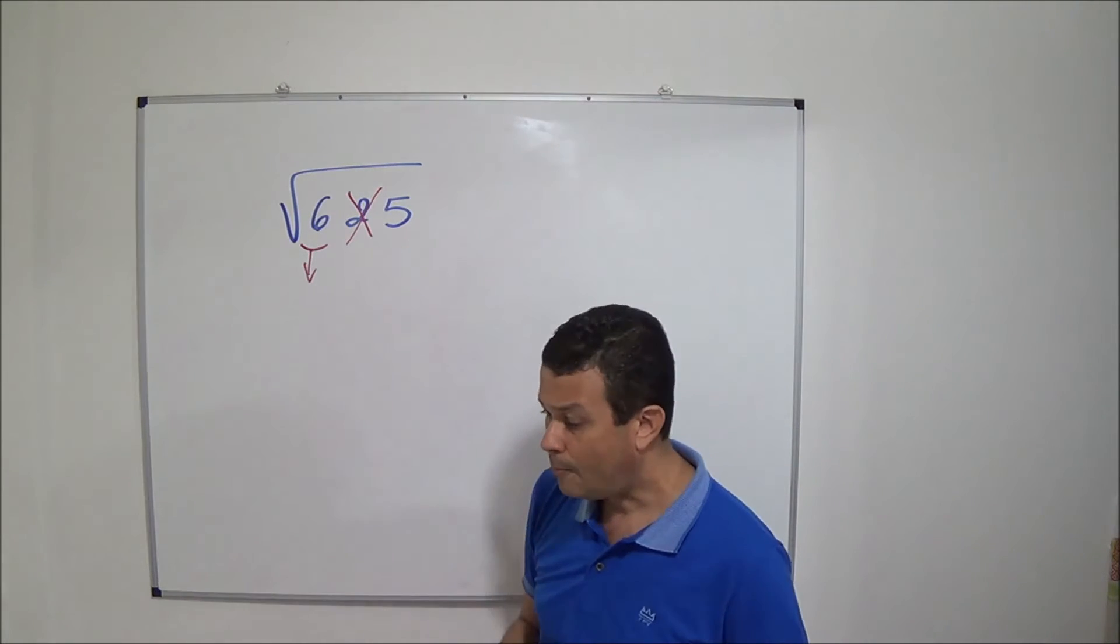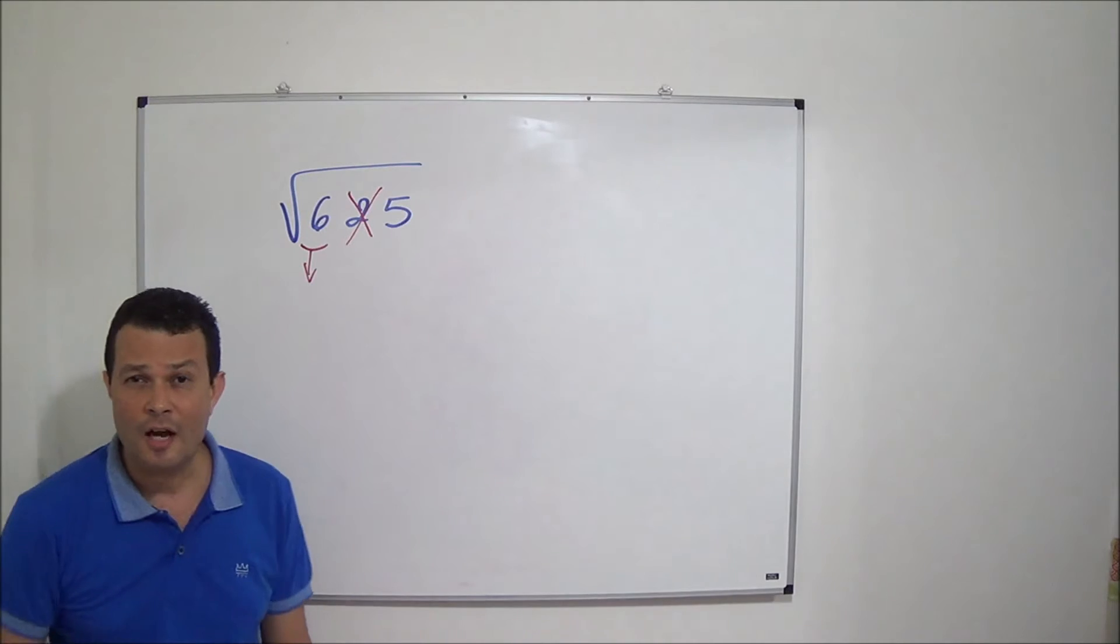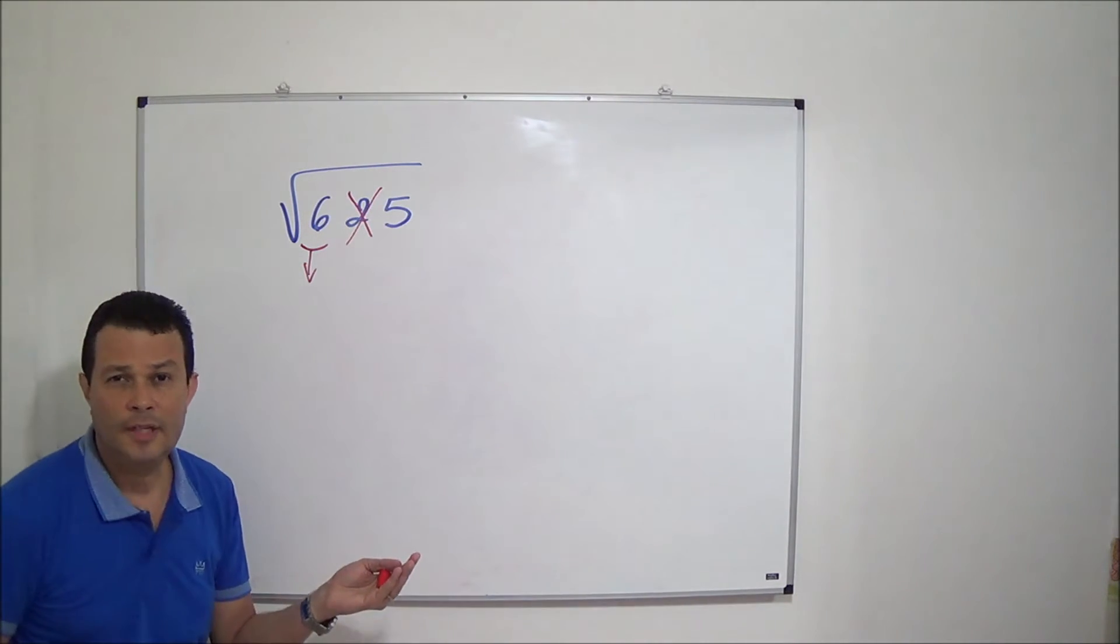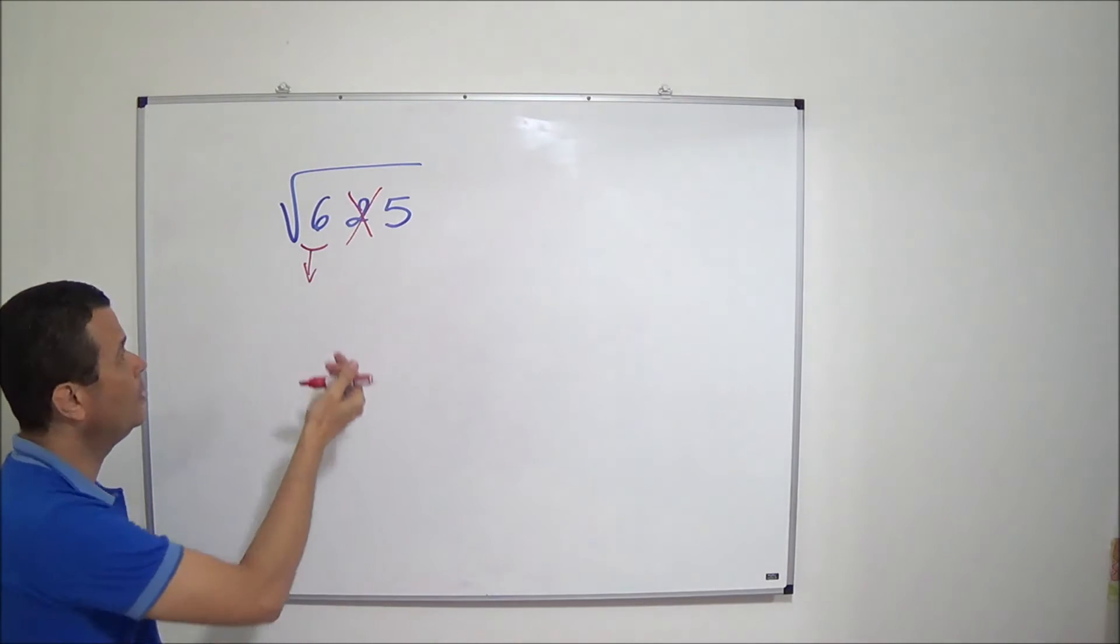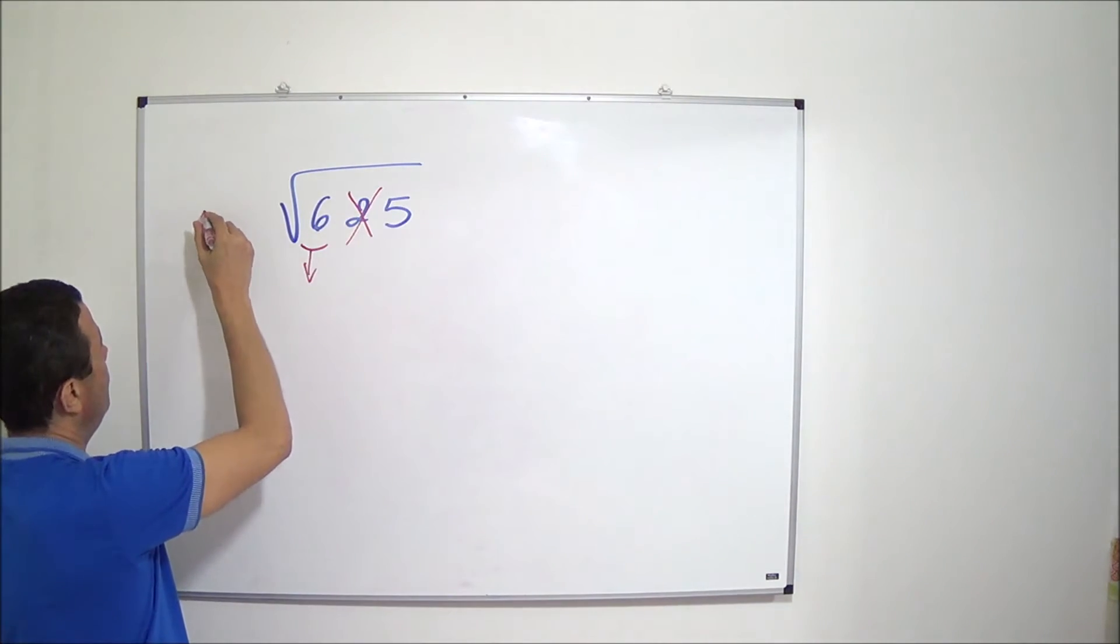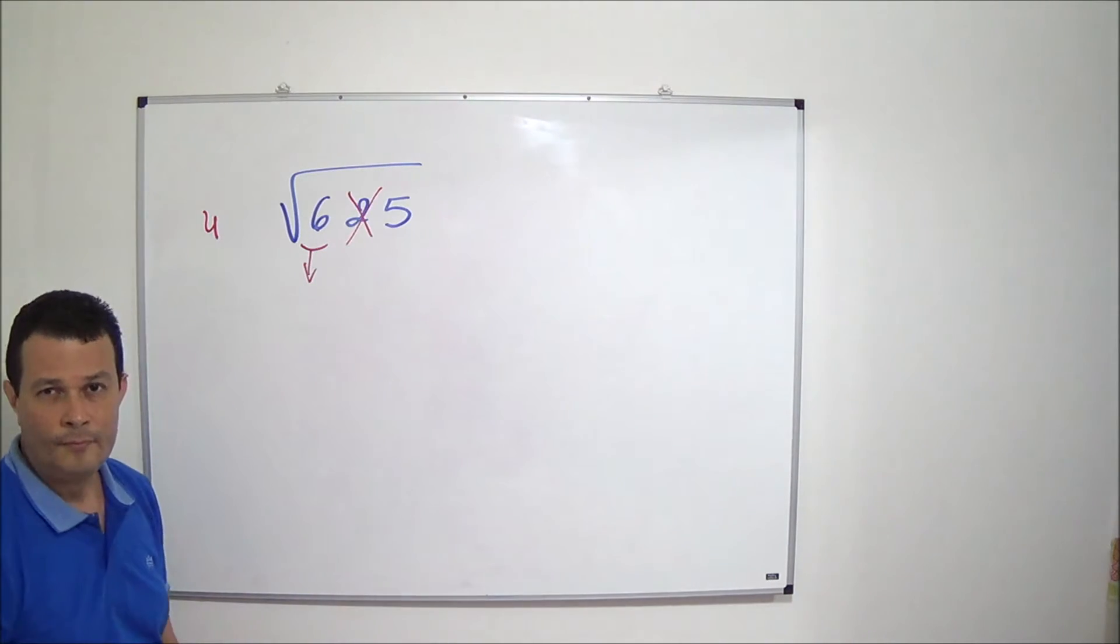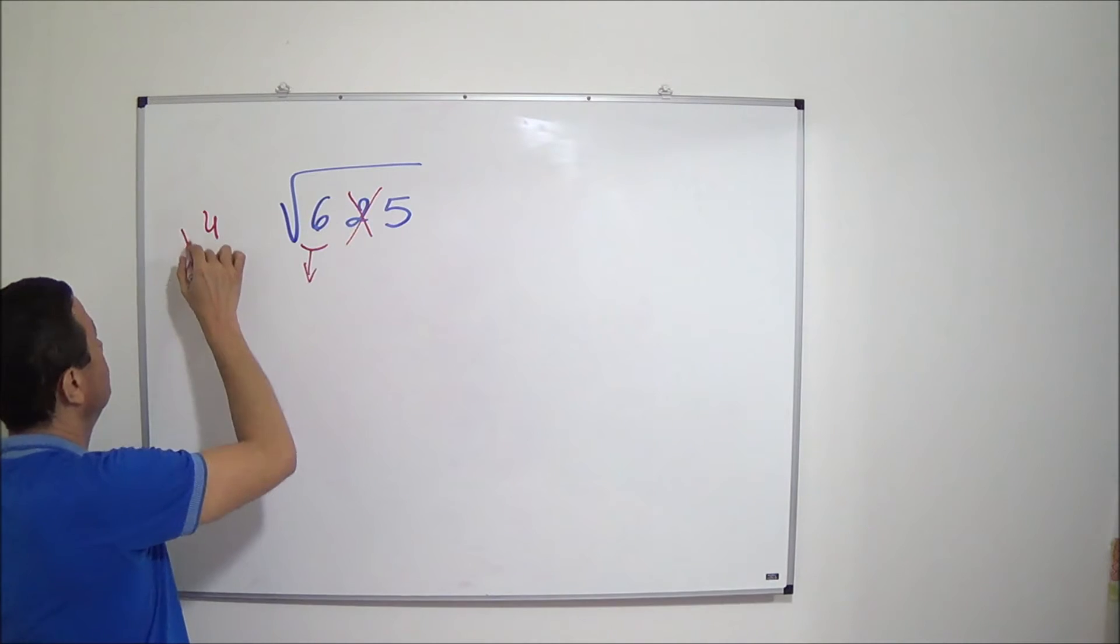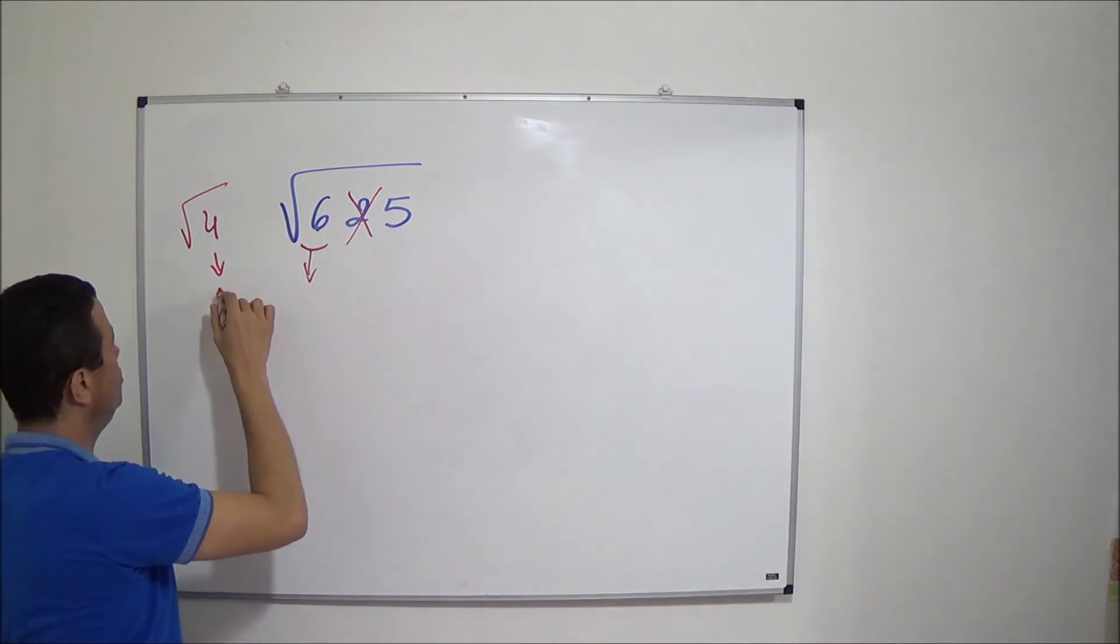Now, I have to find out the perfect square number immediately before 6. That is 4. And square root of 4 is equal to 2.